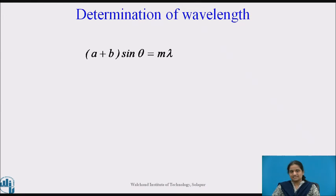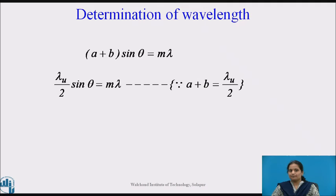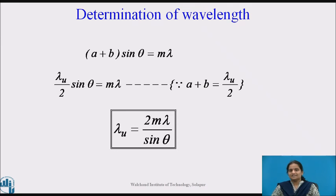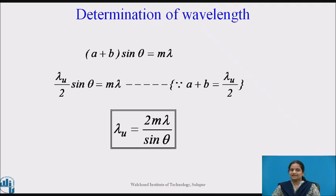The grating equation (a + b) sin θ = mλ is applicable to the acoustic grating also. The grating constant (a + b) in this case equals λ_u/2, giving the equation: λ_u/2 × sin θ = mλ, where λ_u is the wavelength of the ultrasonic waves, λ is the wavelength of the monochromatic light used to produce the diffraction pattern, and m is the order of the maxima taking integer values 1, 2, 3, etc. Therefore, λ_u = 2mλ / sin θ. By knowing the values of λ and m, and measuring the angle θ, we can calculate the wavelength λ_u. This method of determining the wavelength of ultrasonic waves is known as the acoustic diffraction method.